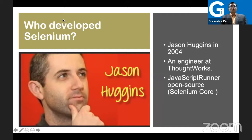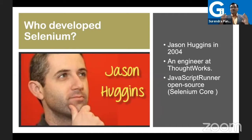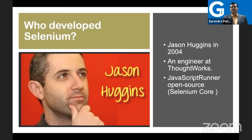We should know the person who developed Selenium. The person who started the development as an open source platform is Jason Huggins in 2004, and he was working as an engineer at ThoughtWorks. Initially the name was not Selenium - it was called JavaScript Runner. Gradually it evolved, and that's the history behind it starting from 2004.